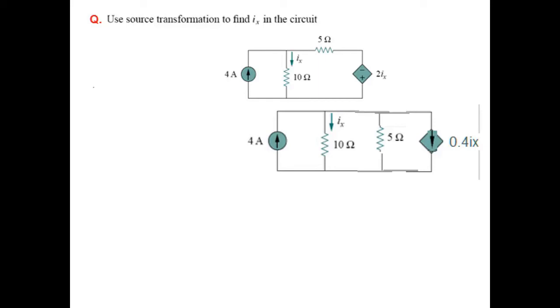Now we see the effect of the two current sources through this resistor. One is coming from up and the other from down, so they are in opposition. The net current is the subtraction: 4 minus 0.4Ix.